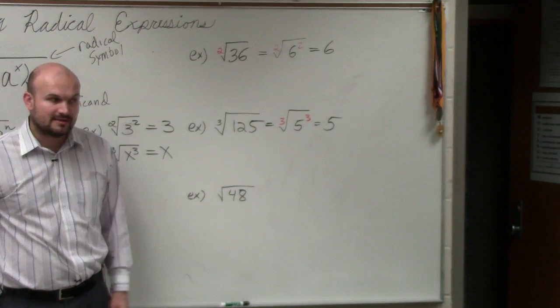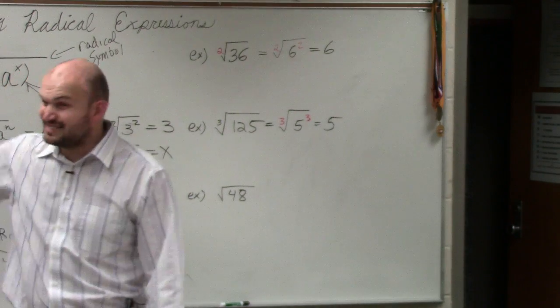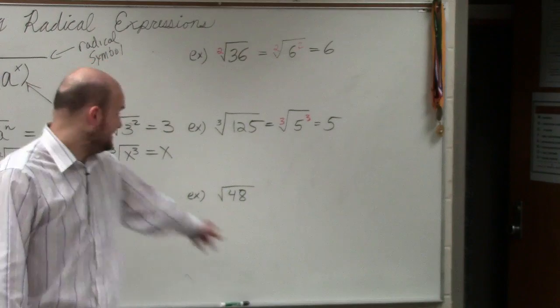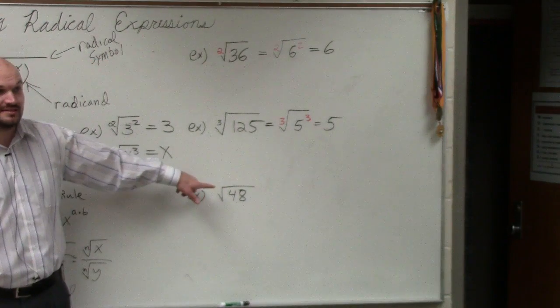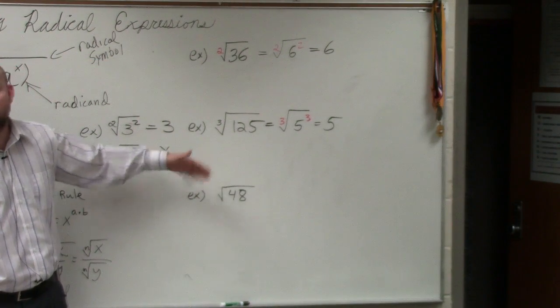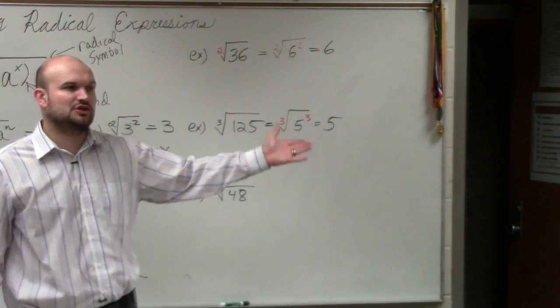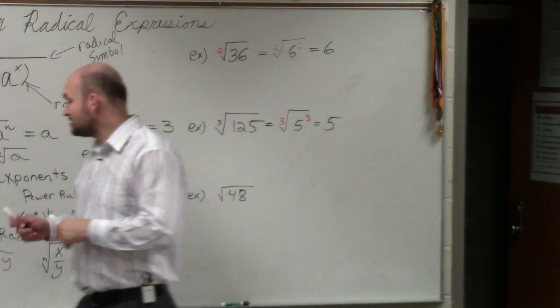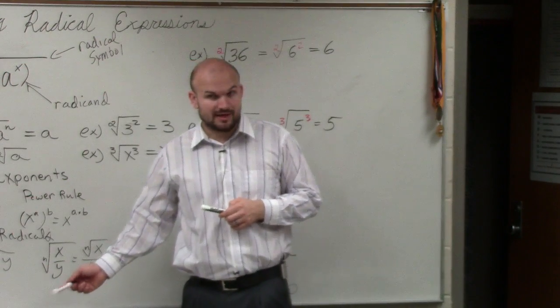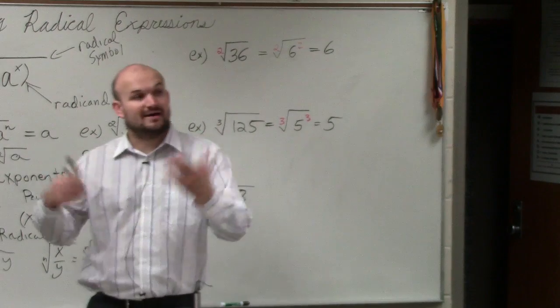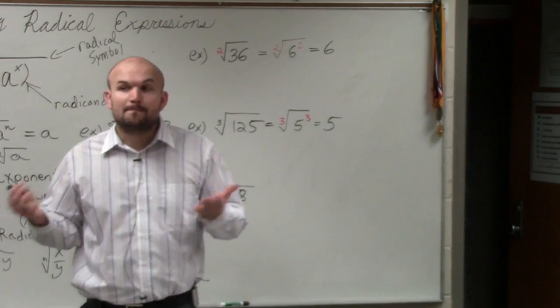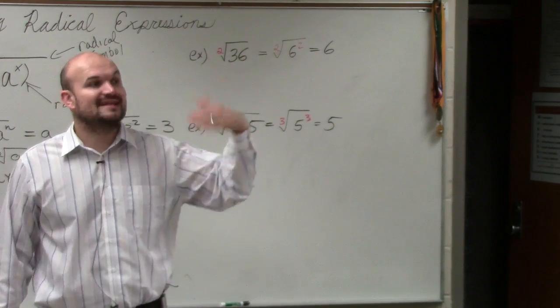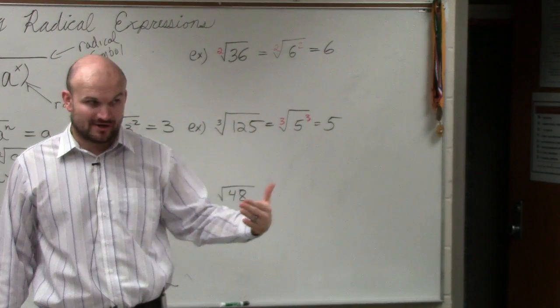So here I have the square root of 48. Now there's a problem, because square root of 48 is not a square number. We need to have a square number, right? Because that's what the index is. But what if it was a cubic or a quartic or so forth? So what I'm going to do now is start using these rules. And what I want to do is say, I know 48 is not a square number, but can I rewrite 48 as a product of a square number and another number?